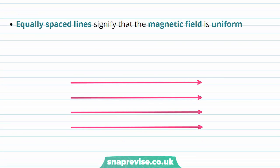If the lines are equally spaced, this signifies that the magnetic field is uniform. So these magnetic field lines are all equally spaced from one another. And this means that this magnetic field is uniform.